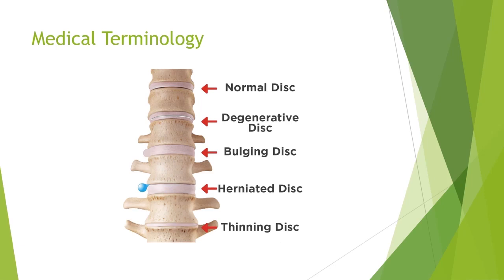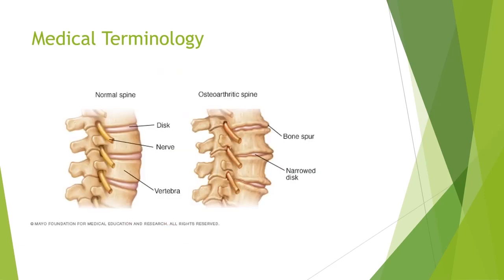At our discs we can also have bulges or herniations. This means instead of our normal round shape, our discs can start to push out in any direction to varying degrees. A lot of us have these and don't even realize it — they only become a problem if they push out in a direction where they start to limit our movement or compress our nerves.